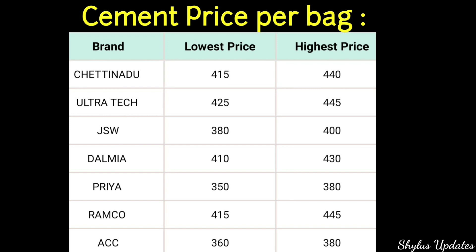Brand, lowest price, highest price. Chettinad cement is from Rs.415 to Rs.440. Ultratech cement is from Rs.425 to Rs.445. JSW is from Rs.380 to Rs.400. Dalmia cement is from Rs.410 to Rs.430.